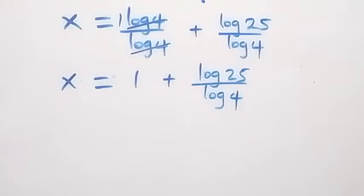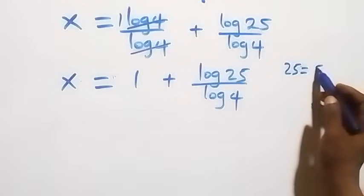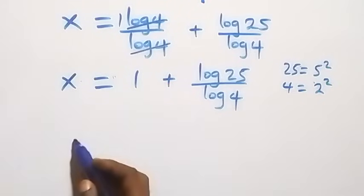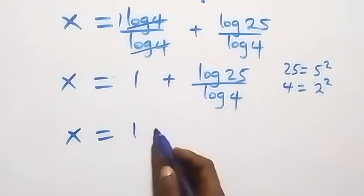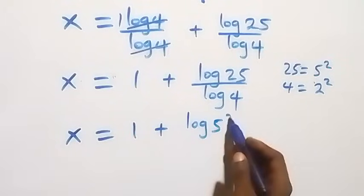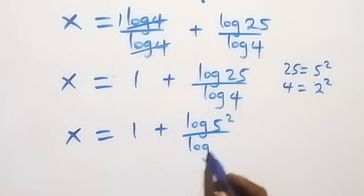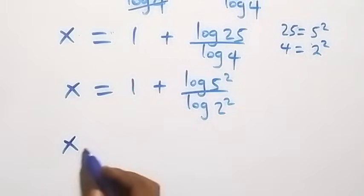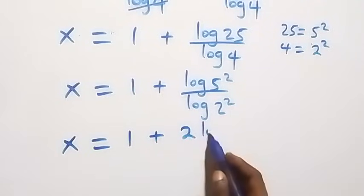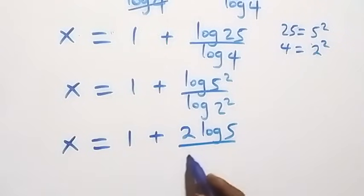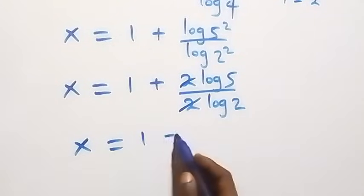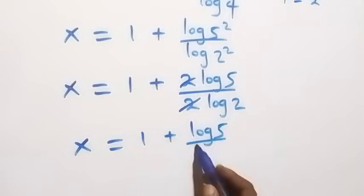Now, 25 is 5 squared and 4 is 2 squared, so x equals 1 plus log(5²) over log(2²). Applying the power rule of logarithms, 2 comes out front in both, giving x equals 1 plus 2 log 5 over 2 log 2. The 2s cancel, leaving x equals 1 plus log 5 over log 2.